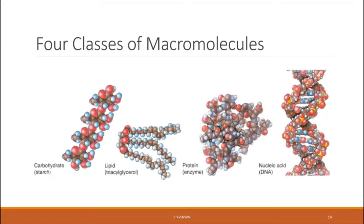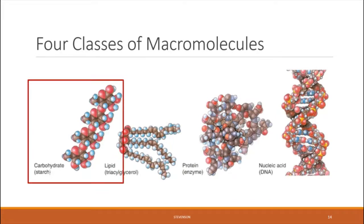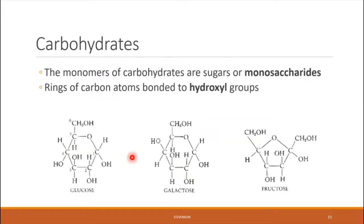Let's get started with the four categories, beginning with carbohydrates. Carbohydrates are composed of monomers called monosaccharides — the fancy word for sugars. Carbohydrates are very large molecules individually made up of building blocks called sugars. The structure of a monosaccharide is a ring of carbon atoms with attached hydroxyl groups — an oxygen bonded to a hydrogen.